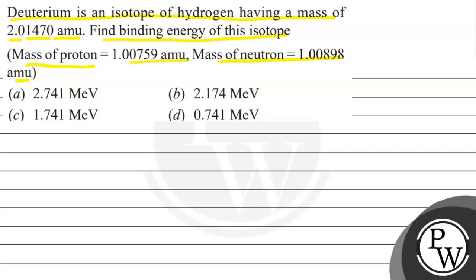Now discuss the key concept. The key concept is that we have an isotope of hydrogen that is deuterium.